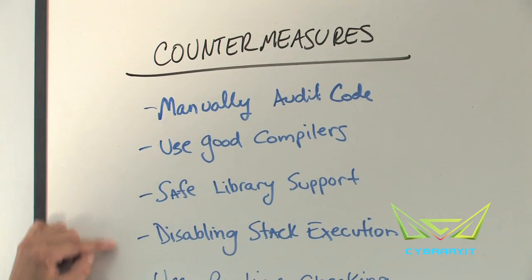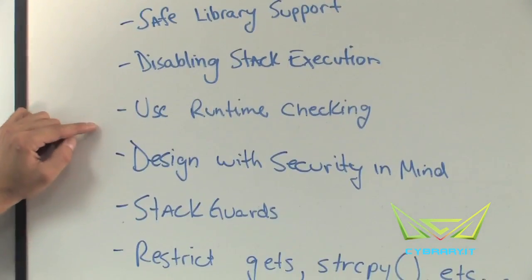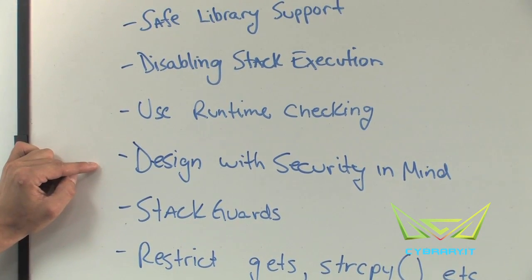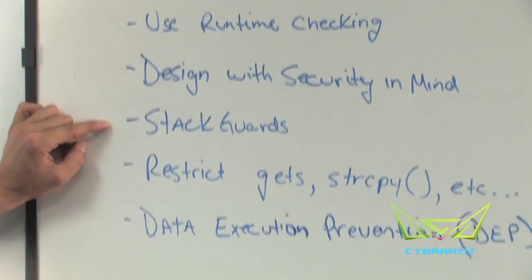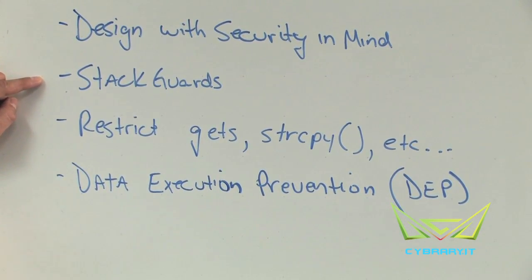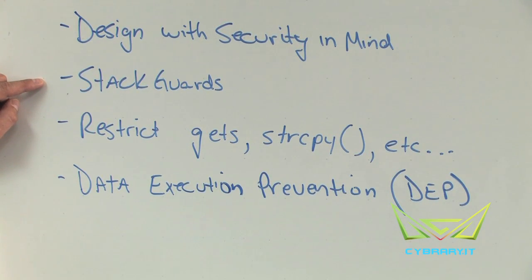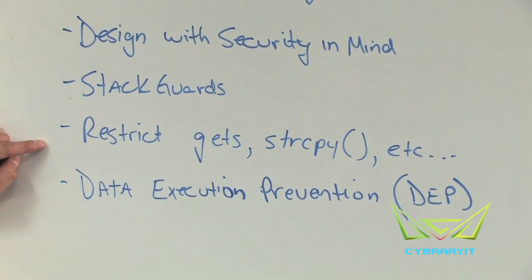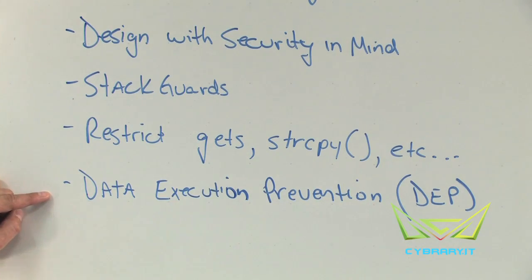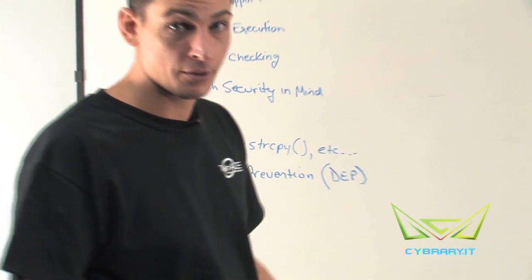Use good compilers or safe compilers with safer library support depending on your programming language. Disable stack execution if at all possible. Use runtime checking so that when the application runs it gets checked. Design the application with security in mind, not just functionality. You can use stack guards, which detect a buffer overflow as the executable is running and stop or prevent it — kind of like intrusion prevention software for executables. Also restrict certain dangerous functions like gets, string copy, or malloc, and put boundary checks on them. From the Windows side, you can use Data Execution Prevention (DEP), which is essentially a toggle setting.